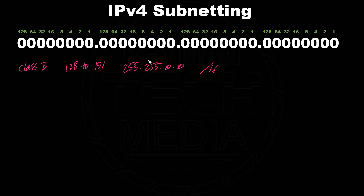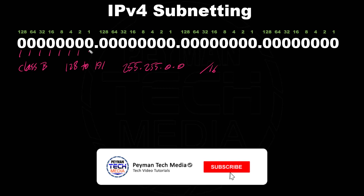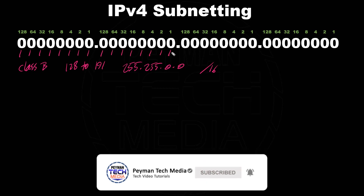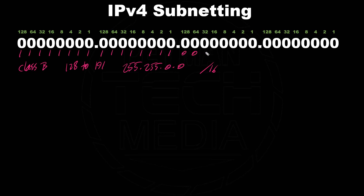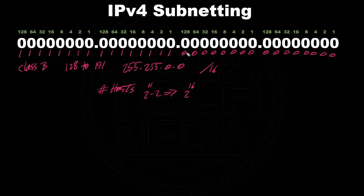The first octet and the second octet have all the bits turned on — that's 16 bits for the network bits — this is the default subnet mask for Class B. And we have 16 bits for the host bits. The number of hosts is 2 to the power of host bits minus 2. Zeros represent host bits, so we have 16 zeros for the default subnet mask Class B. So 2 to the power of 16 minus 2 equals 65,534.